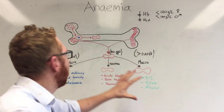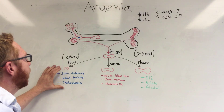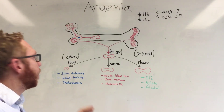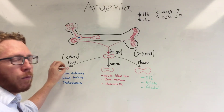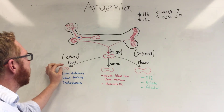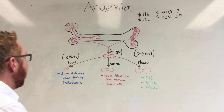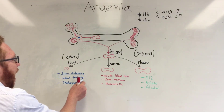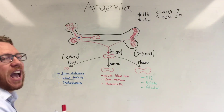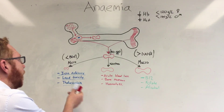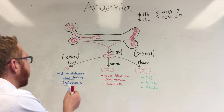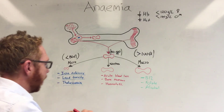For small red blood cells, the problem is with hemoglobin — there isn't enough hemoglobin packing into the cell, which makes it small. Causes include iron deficiency, lead toxicity, or thalassemias (alpha and beta), which are essentially hemoglobinopathies.